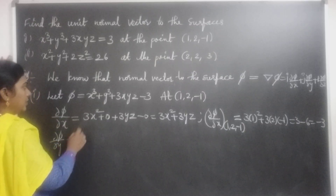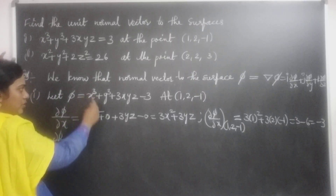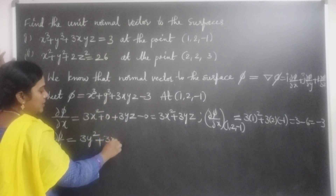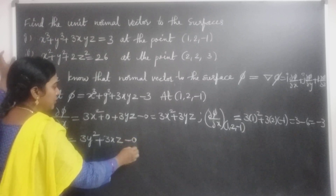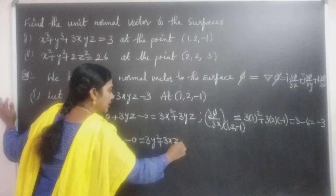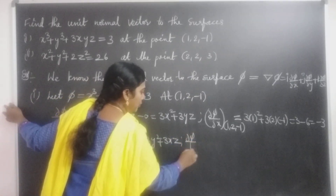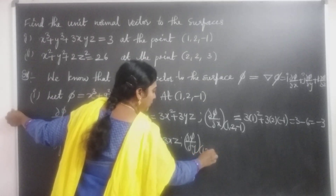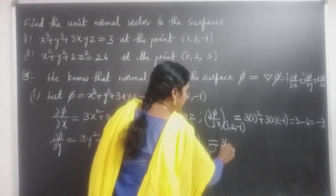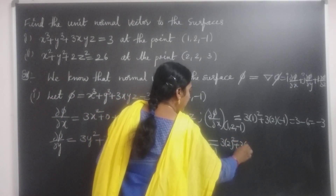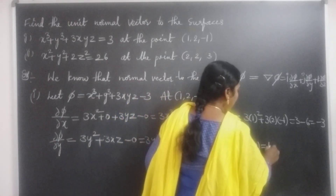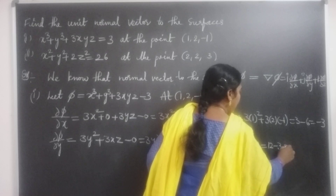∂φ/∂y: the x³ derivative is 0, giving 3y² + 3xz. So ∂φ/∂y = 3y² + 3xz. At point (1, 2, −1): ∂φ/∂y = 3(2²) + 3(1)(−1) = 12 − 3 = 9.